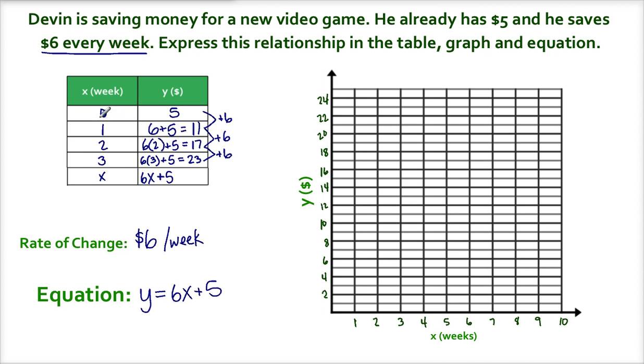Let's graph this information. Here are the points. I have the point 0, 5, so 0, 5, I have the point 1, 11, the point 2, 17, and the point 3, 23. So 3, 23, enough points for me to draw my line, and it looks something like that.